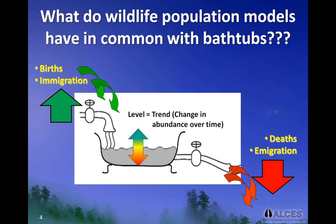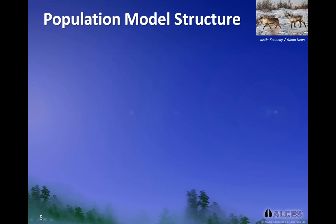Biologists refer to these types of bathtub models as stock and flow models, where a stock represents a group of animals, and flow refers to the number of new animals added or removed. For this example, we will assume that the number of animals immigrating and emigrating cancel each other out.